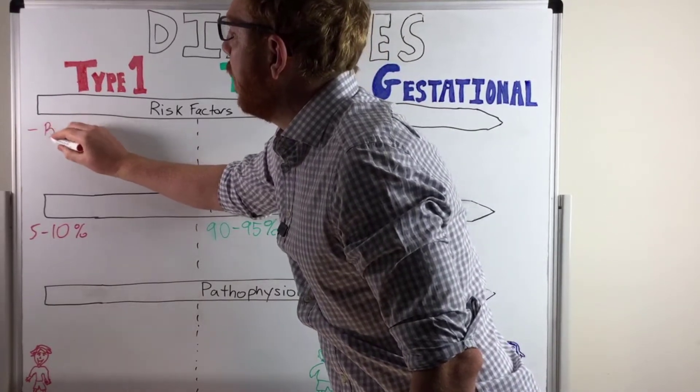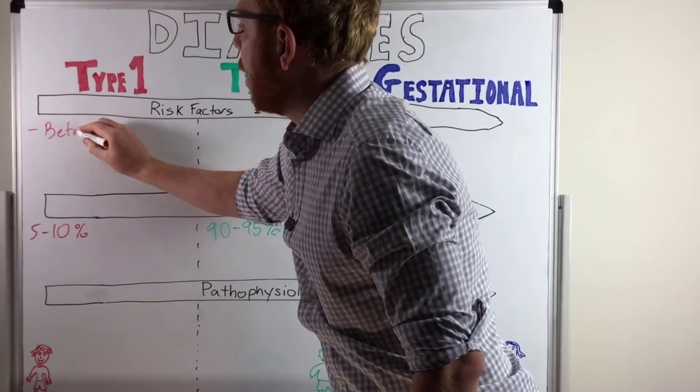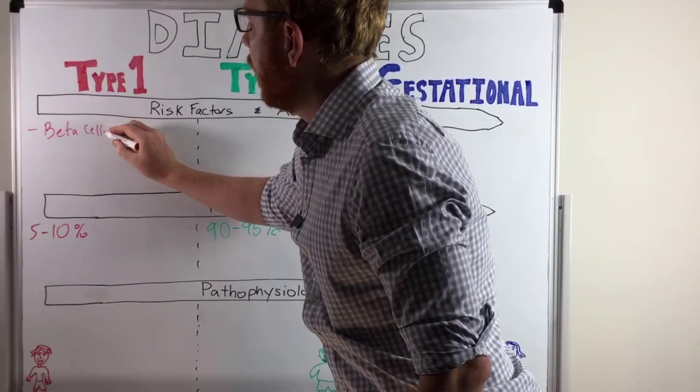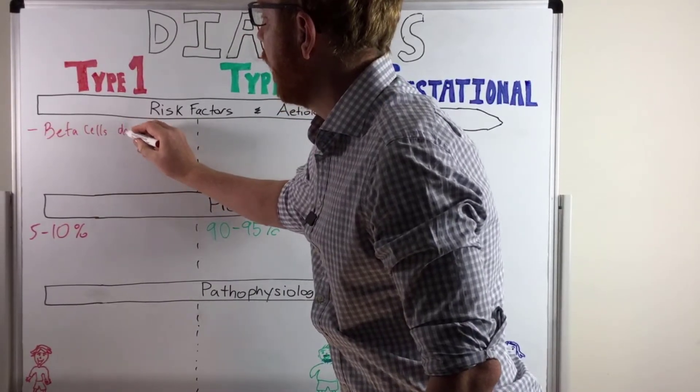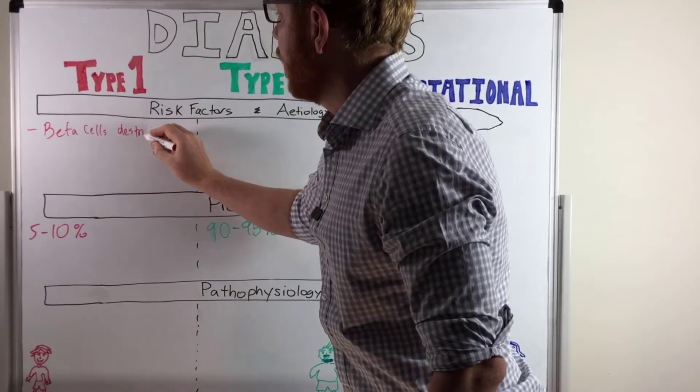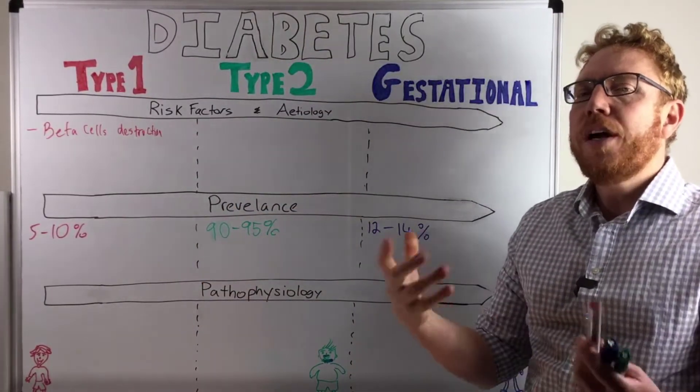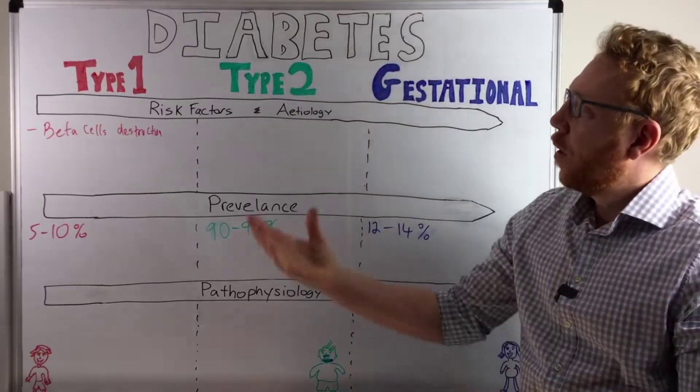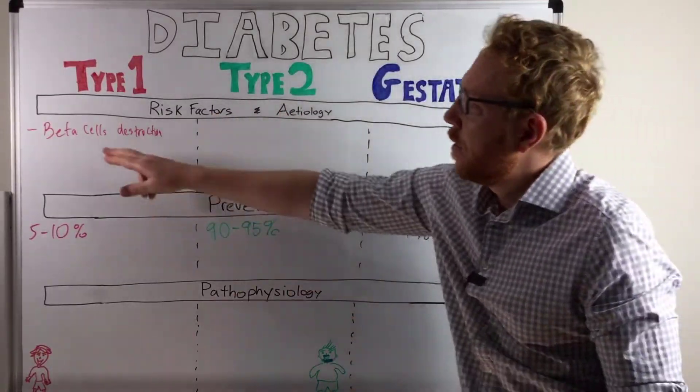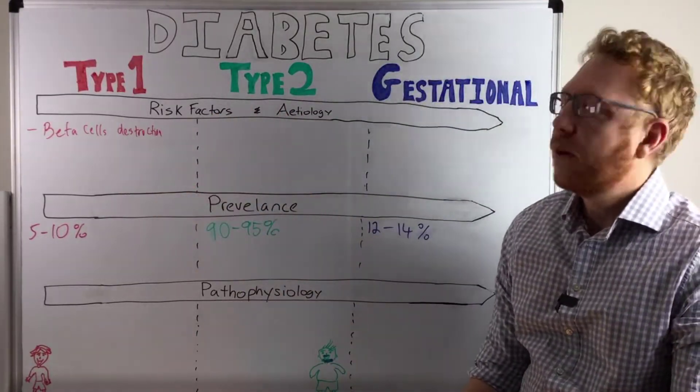Beta cells are those cells in your pancreas that secrete and create insulin. So in this type of diabetes, there's a destruction to these type of cells.